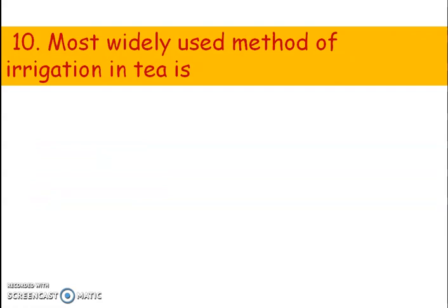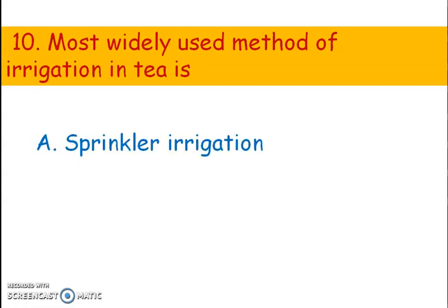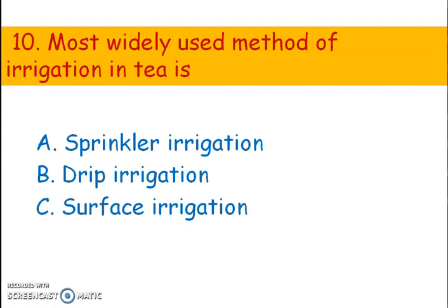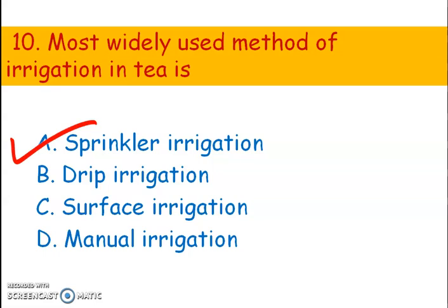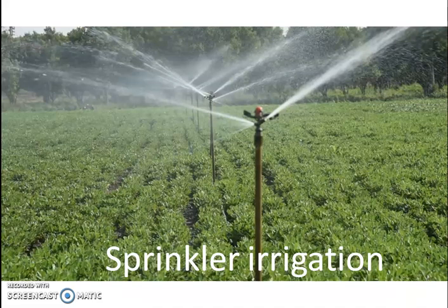Next question. What is the most widely used method of irrigation in tea? Options: A) Sprinkler irrigation, B) Drip irrigation, C) Surface irrigation, D) Manual irrigation. The right answer is option A, sprinkler irrigation. Sprinkler irrigation is a method of applying irrigation similar to rainfall. This is the picture of sprinkler irrigation — it sprays water and looks as if it is raining.